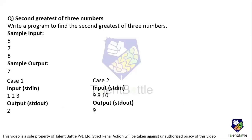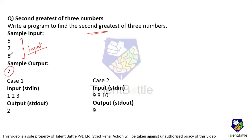Hello friends, I am Rohit from Talent Battle. In this video we will discuss a coding question. We have to identify the second greatest of three numbers — they will provide three numbers as input and we have to write a program to find the second greatest number. For example, with input 5, 7, 8, the expected output is 7, because 8 is the greatest and 7 is the second greatest.